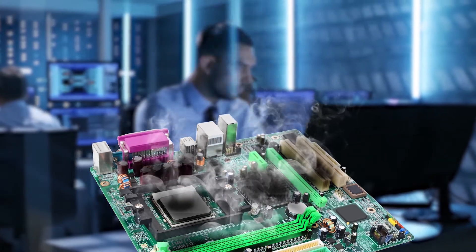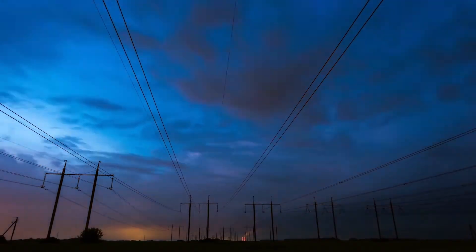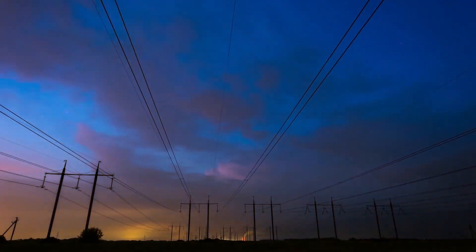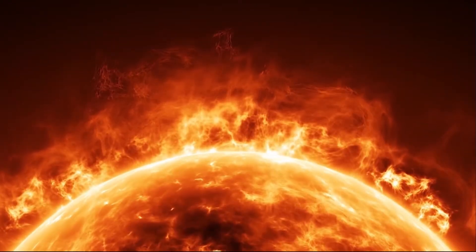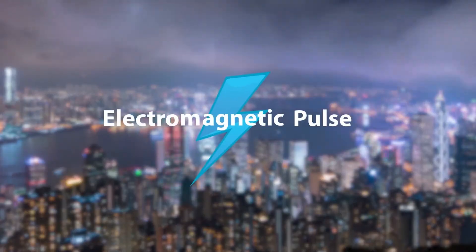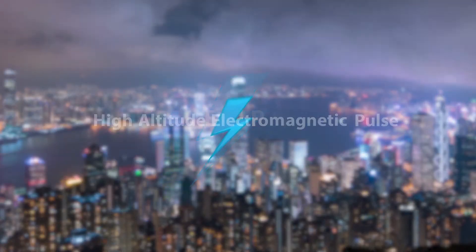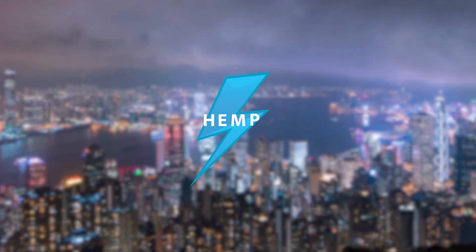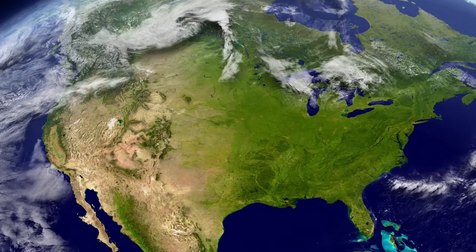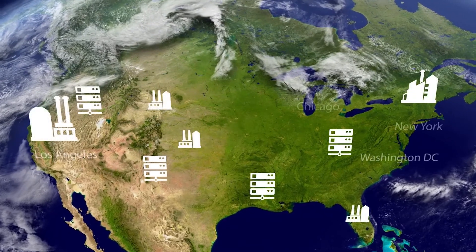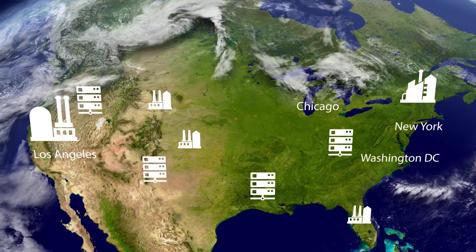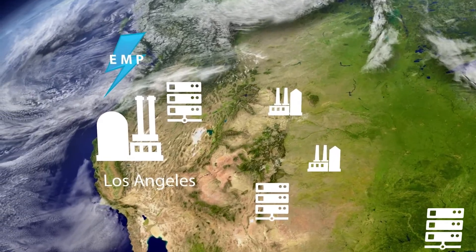Naturally occurring EMI sources include lightning and geomagnetic storms, and artificial EMI includes electromagnetic pulse, or EMP, and high-altitude electromagnetic pulse, or HEMP. Of particular concern to a modern society is the threat of targeted EMP strikes and widespread HEMP attacks.